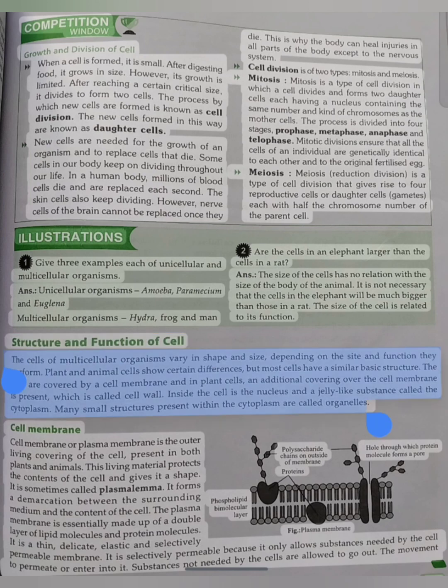Structure and function of cell. The cells of multicellular organisms vary in shape and size, depending on the site and function they perform. Plant and animal cells show certain differences, but most cells have a similar basic structure. The cells are covered by a cell membrane and in plant cells, an additional covering over the cell membrane is present, which is called cell wall. Inside the cell is the nucleus and a jelly-like substance called the cytoplasm. Many small structures present within the cytoplasm are called organelles.